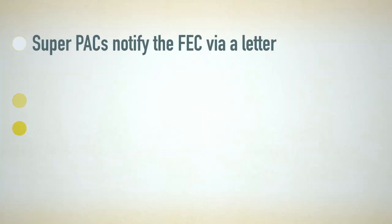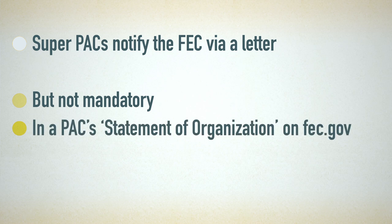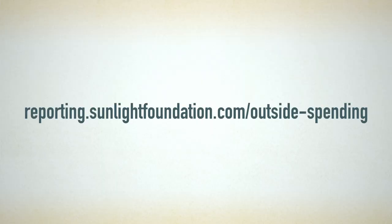So how do you know if a political action committee is a Super PAC? Super PACs generally notify the FEC of their existence by sending a letter, but that's not mandatory. You can usually find this in the PAC's Statement of Organization on the FEC's website, or you can view all the letters at Sunlight's Follow the Unlimited Money website at reporting.sunlightfoundation.com/outside-spending. Like other political action committees, most Super PACs must file regular financial disclosure reports with the FEC.